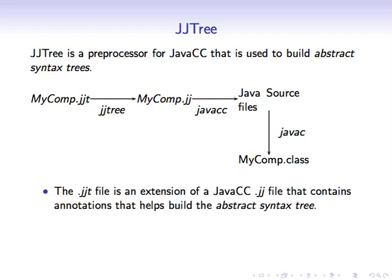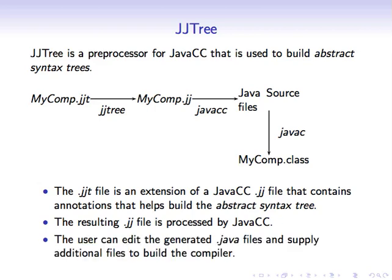The .jjt file is an extension to JavaCC and contains some additional annotations called decorations that help us build the abstract syntax tree. This .jjt file is processed by JJTree to produce a .jj file which can be processed by JavaCC to give a set of source files. These source files can be edited or additional files can be added to it in order to build our compiler.